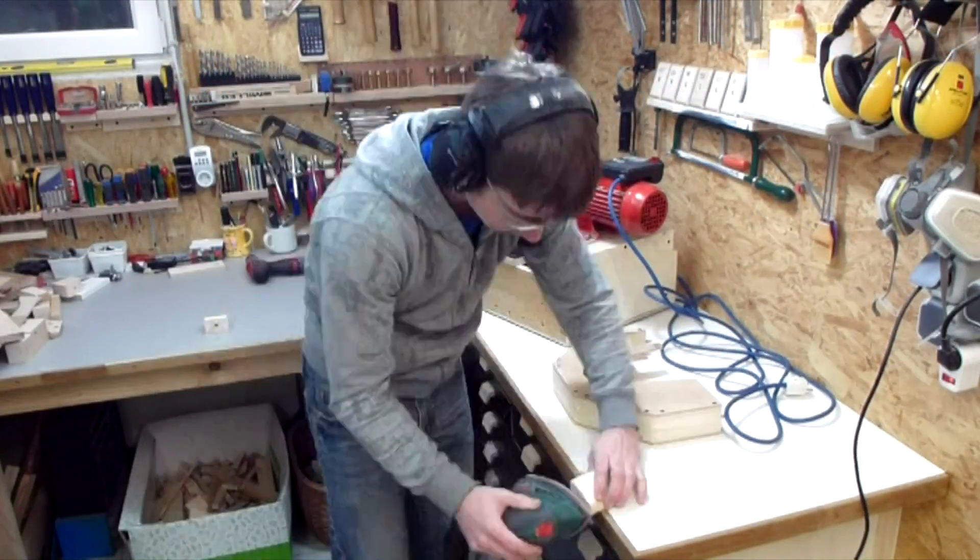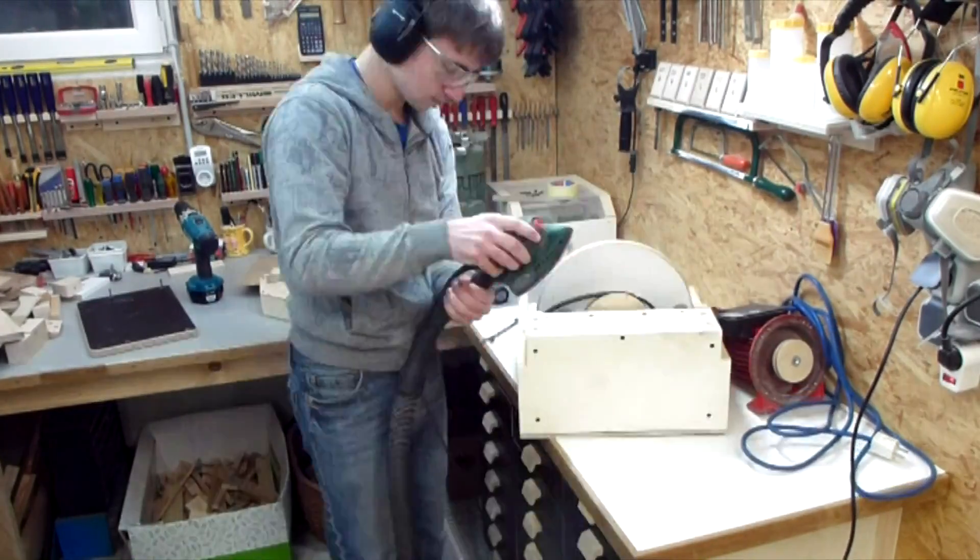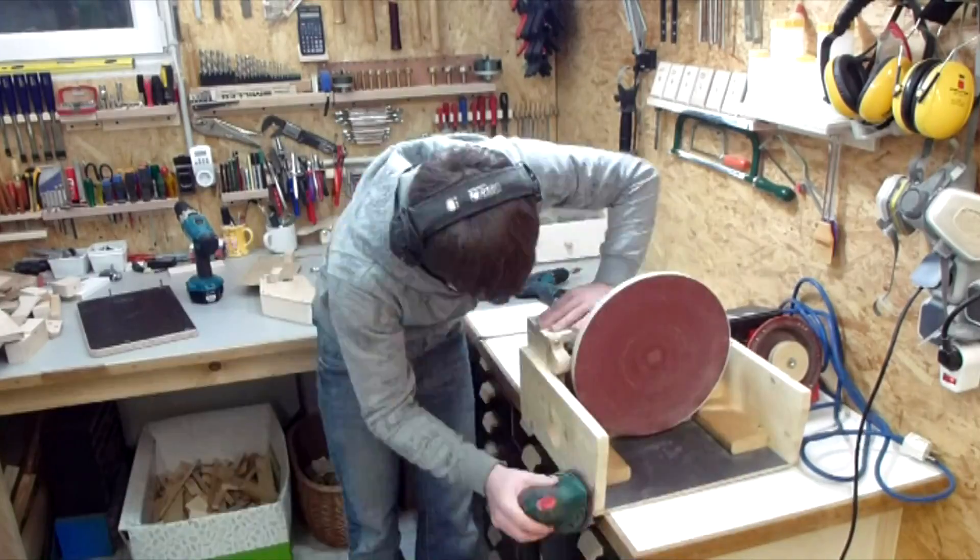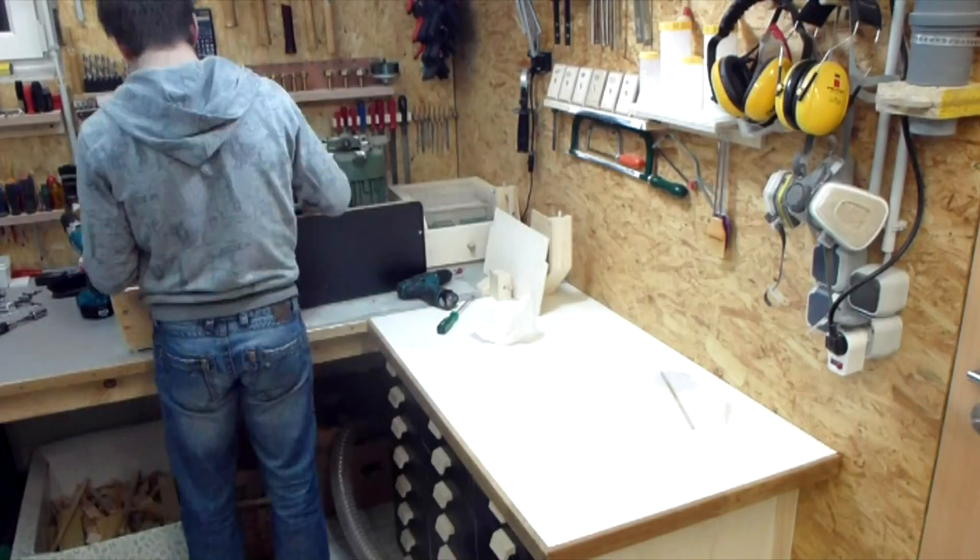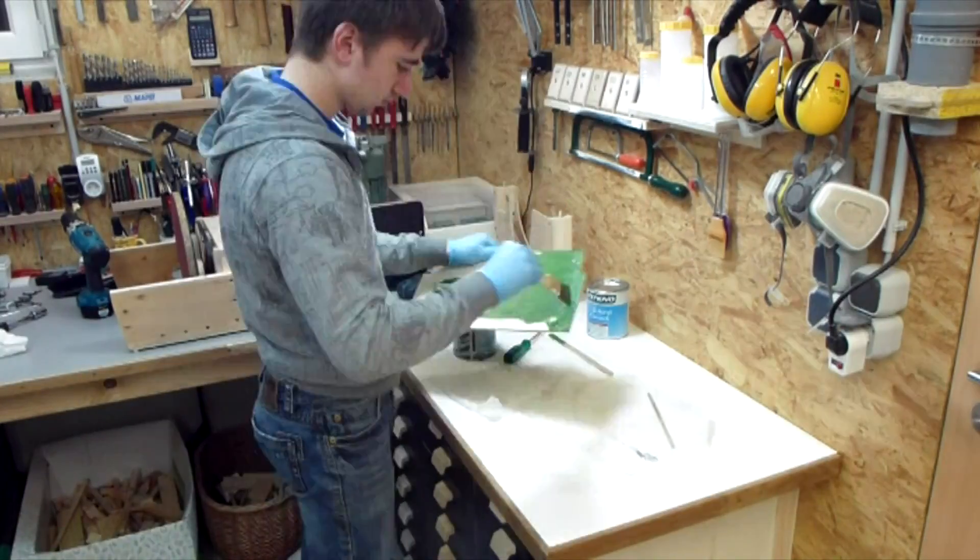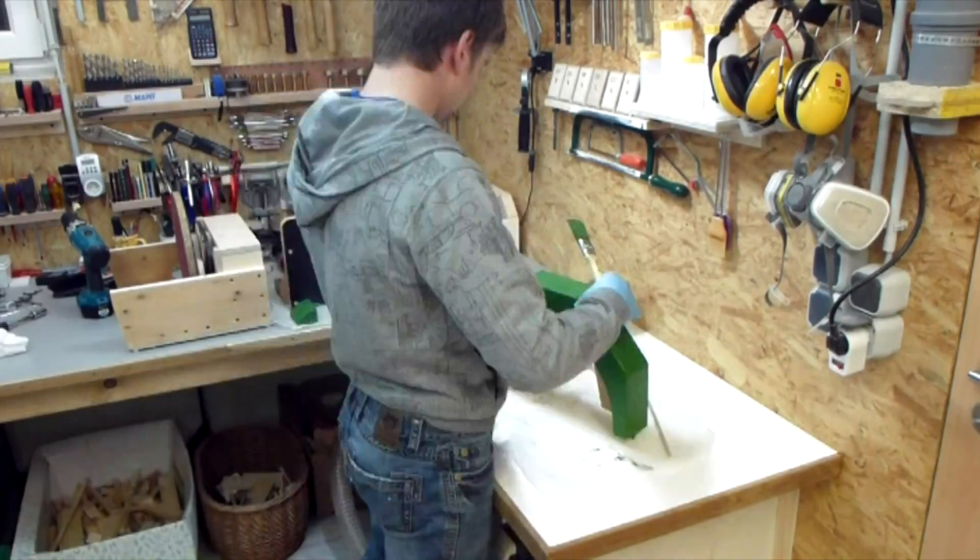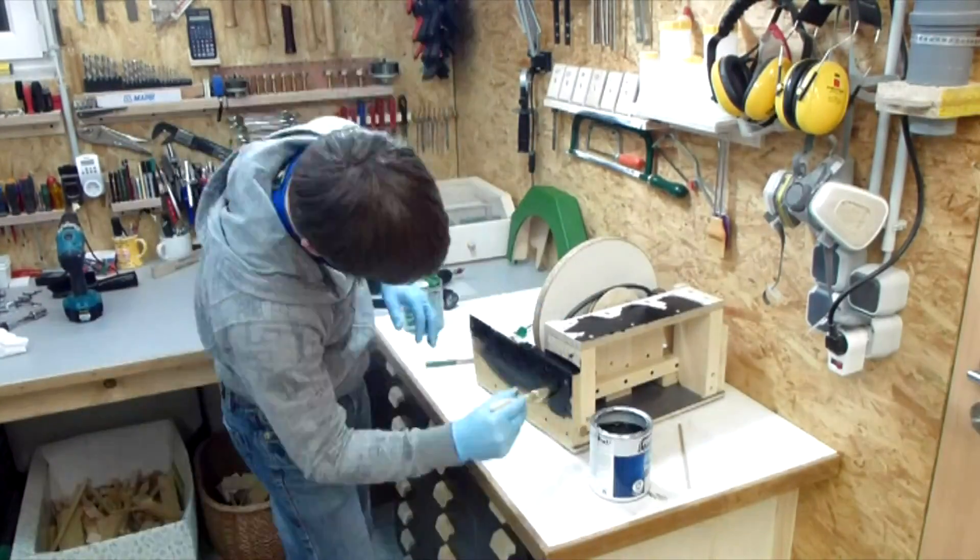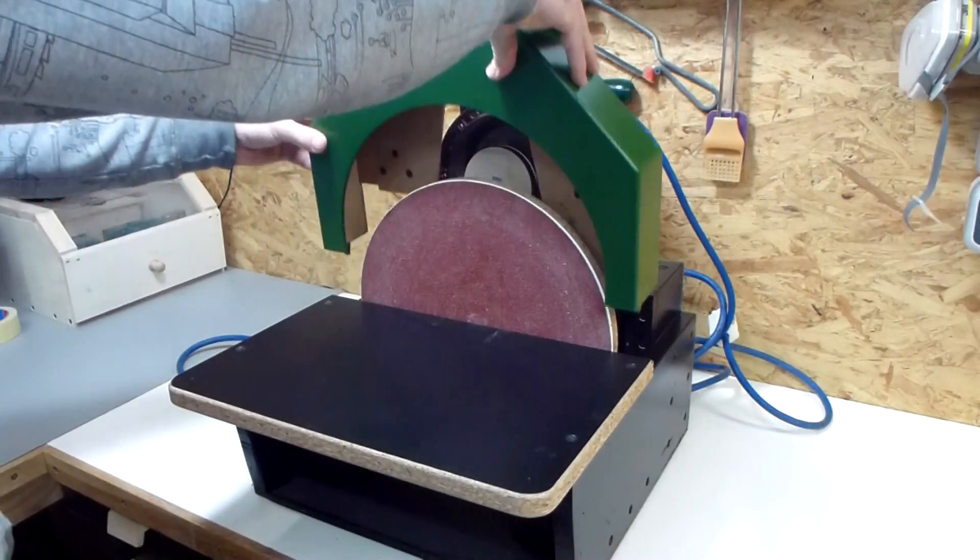Because everything on the sander came out much better than I expected, I decided to really finish it. So I sanded everything to 80, 120 and finally to 180 grit. And then I painted and varnished everything in the same green black color scheme that all of my homemade machines follow. I put on two coats of paint and one coat of varnish to give it some gloss. And I also sealed the edge of the disc and the table with varnish.